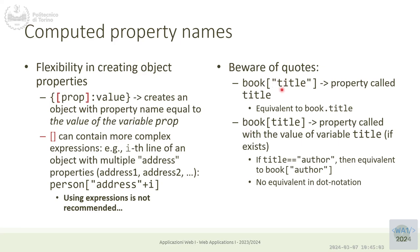So `book['title']` accesses the property called 'title', while `book[title]` accesses the property whose name is the current value of the variable `title`. This is a fixed property name versus a dynamic property name — we look at what the variable `title` contains and that becomes the real property name being accessed.